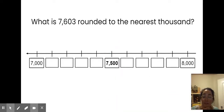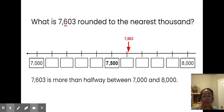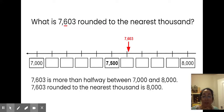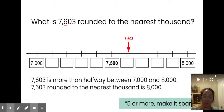What is 7,603 rounded to the nearest thousand? I could look at the hundreds digit, or I could locate my number on the number line. The digit I am looking at to round is six. 7,603 is more than halfway between 7,000 and 8,000. So 7,603 rounded to the nearest thousand is 8,000. Five or more? Make it soar.